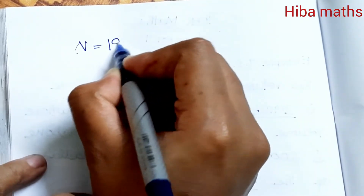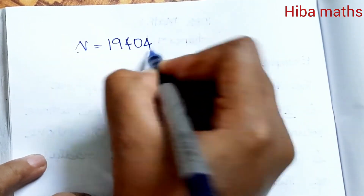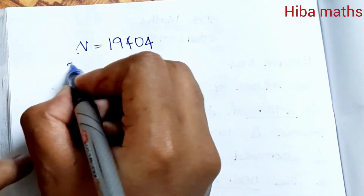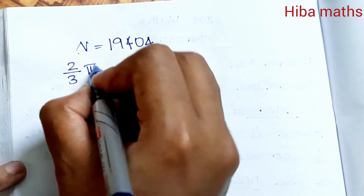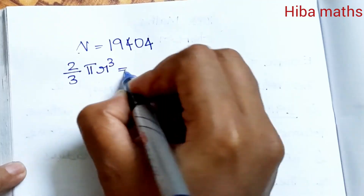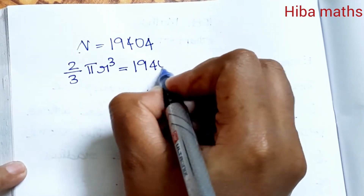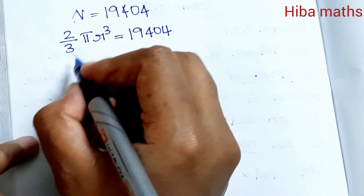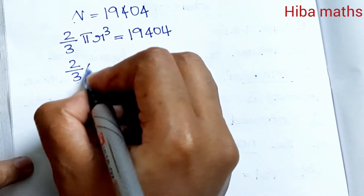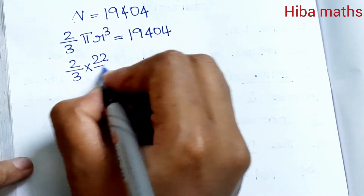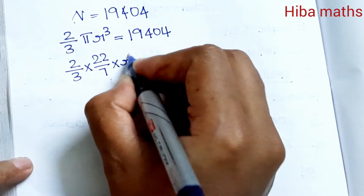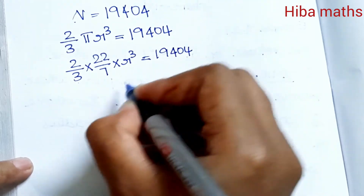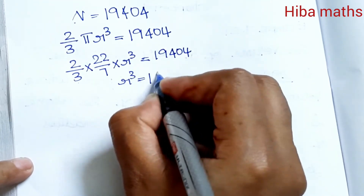Now we have the new volume. Using the formula for the volume of a hemisphere: (2/3)πr³ = 19404. Substituting π = 22/7: (2/3) × (22/7) × r³ = 19404. Therefore r³ = 19404 × 3/2 × 7/22.